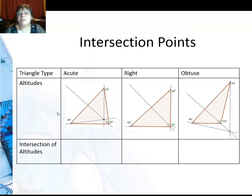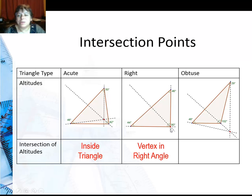Which leads us to this table. I have the altitudes for a couple different triangles. If it was acute, the intersection was inside the triangle. If it was a right triangle, it's that vertex at the right angle. And if it's obtuse, it's outside of the triangle. So it behaves very similarly to perpendicular bisectors.